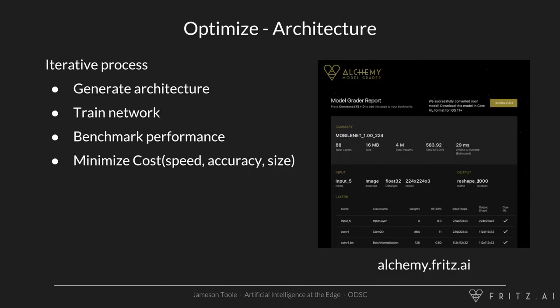We've built a tool — it's totally free. If you go to alchemy.fritz.ai, you can upload your neural network and we will tell you all of these characteristics: how big is the model, how many parameters does it have, and how fast can you execute it on a device like an iPhone X. You can figure this out ahead of time before you train things — you definitely want to make sure that your model is going to work in your use case before you take the time to train it.